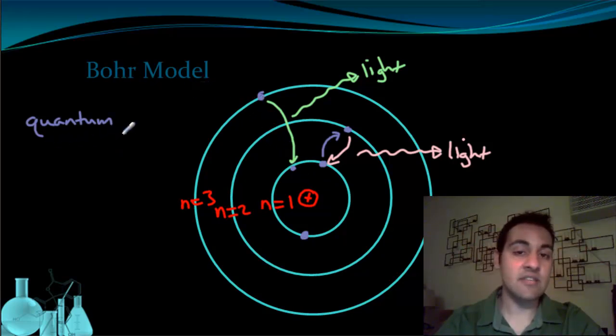If an electron does not receive the right quantum of energy, does not receive the right amount of energy, it will not be able to jump up. It will not be able to absorb it. Because an electron, as we said before, can't exist in between these orbits. Just like you can't stand on the space between steps on a ladder, an electron can't stay in the space between orbits.